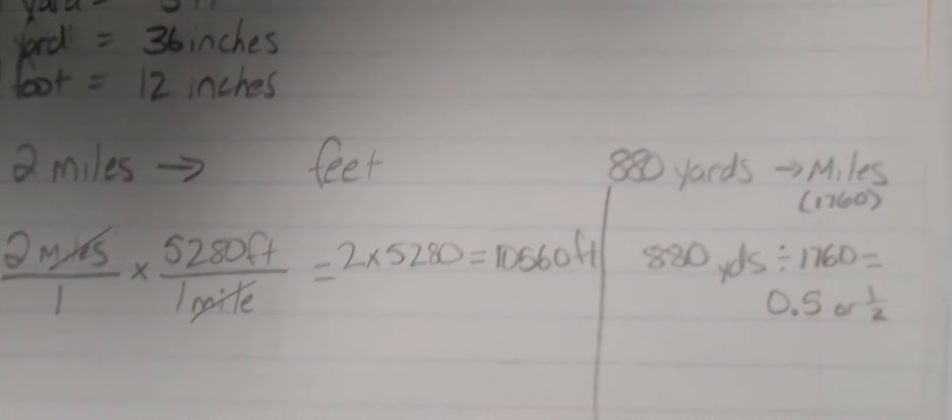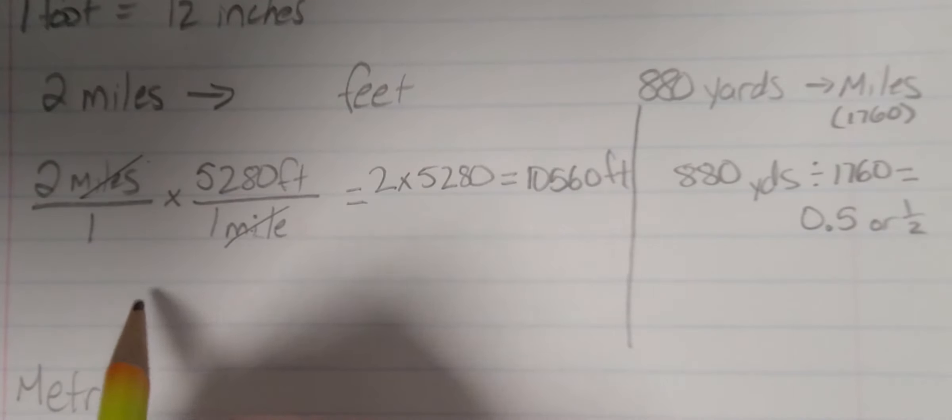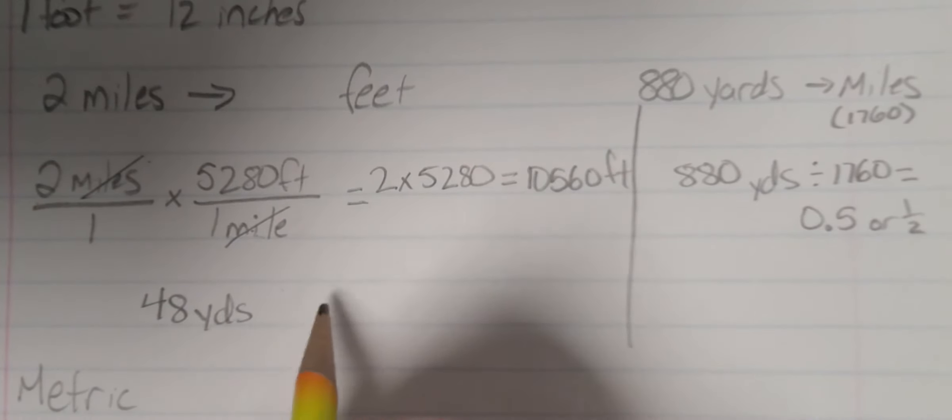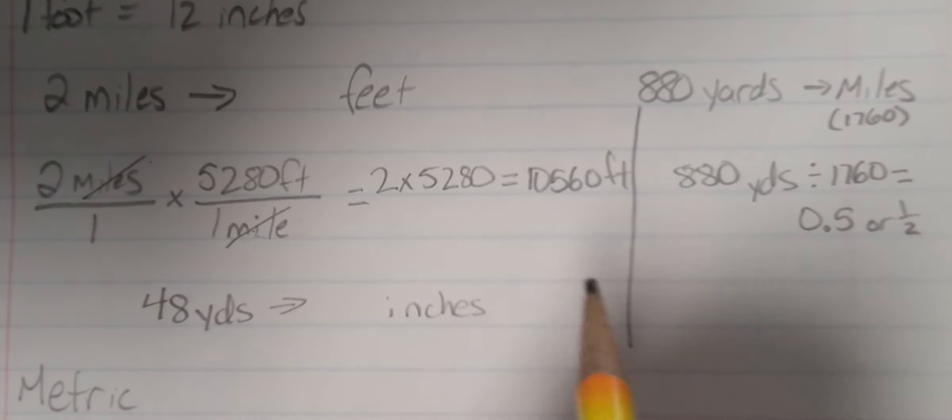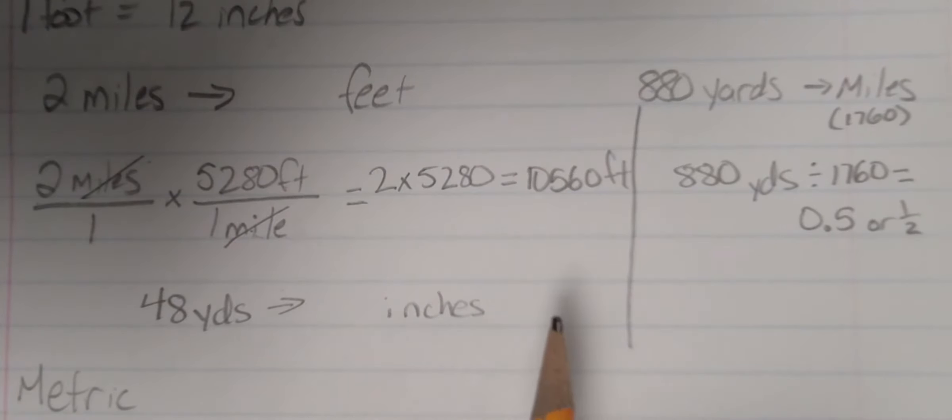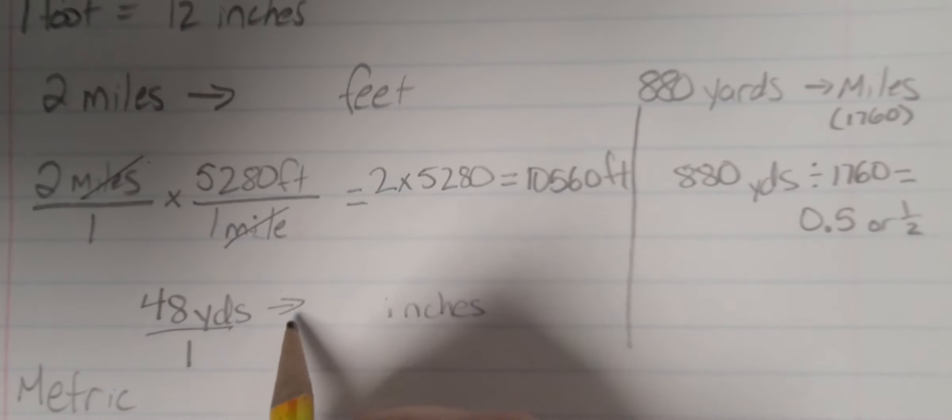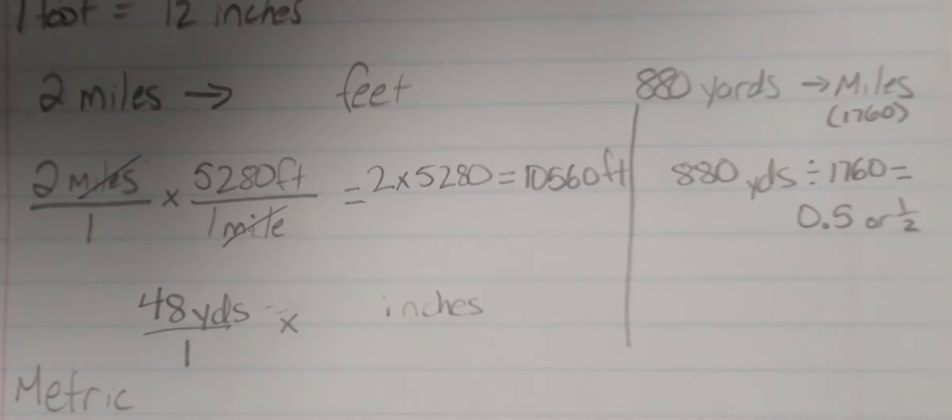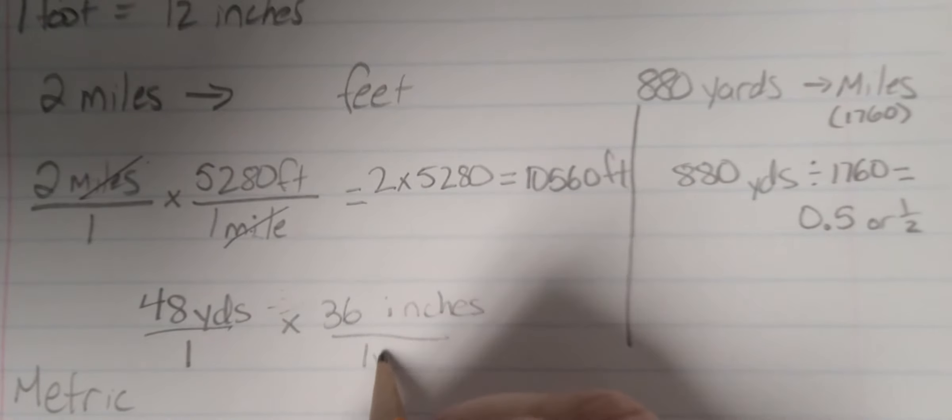Now, let's say we take another example. Let's do 48 yards, and I want to break this down into inches. So now, I'm going to cut this up, so I'm going to need more pieces, so I'm multiplying. So I'm going to take my 48 yards over 1. Now, I'm going to multiply this by 36 inches over 1 yard.